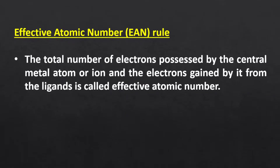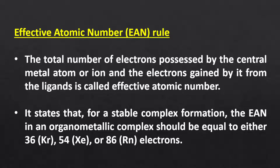The effective atomic number is defined as the total number of electrons possessed by the transition metal atom or ion and the electrons gained by it from the ligands. The effective atomic number rule states that for a stable complex formation, the effective atomic number in an organometallic complex should be equal to either 36, 54, or 86 electrons.